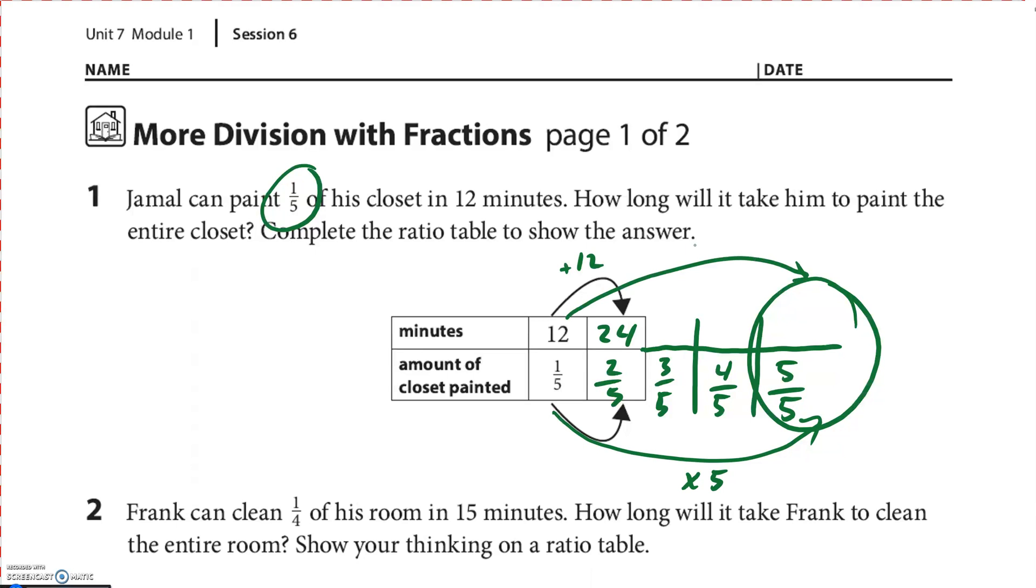So 12 times five, what's 12 times five? Well, 12 times five, 12 times 10, oh excuse me, five times 10 is 50, five times two is 10, so it's 60. I think it'll take him 60 minutes. That's my answer.